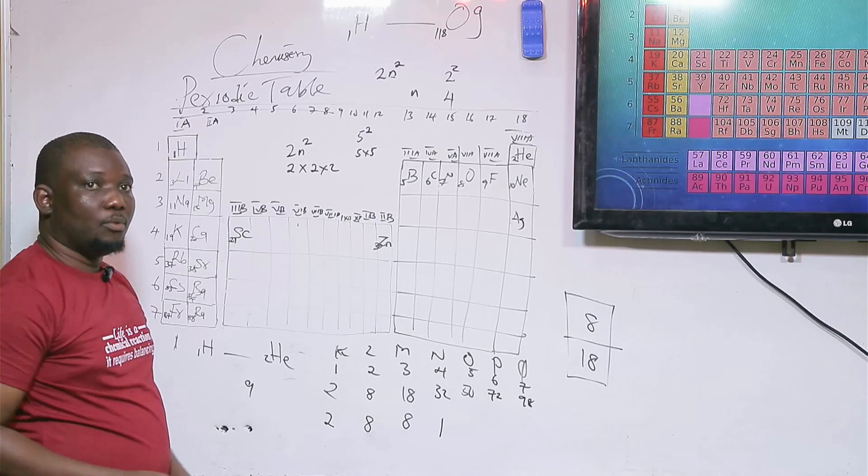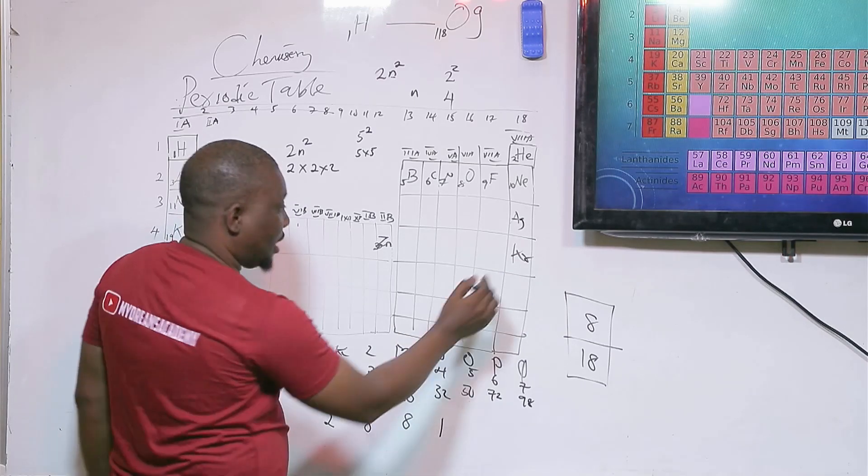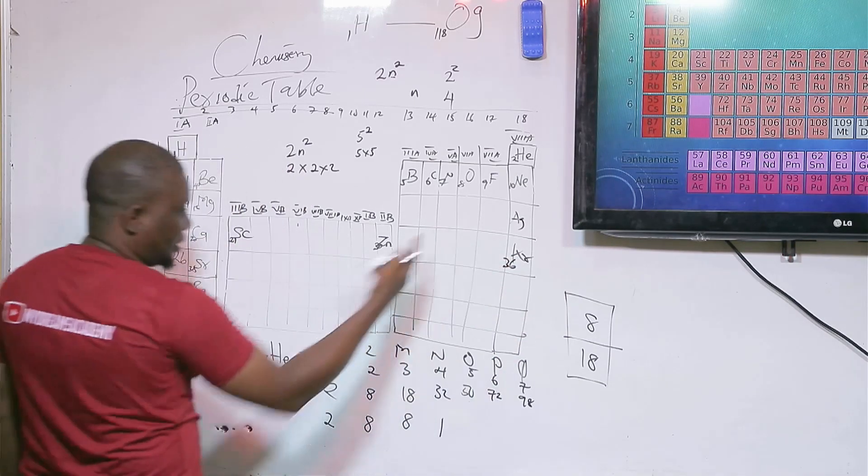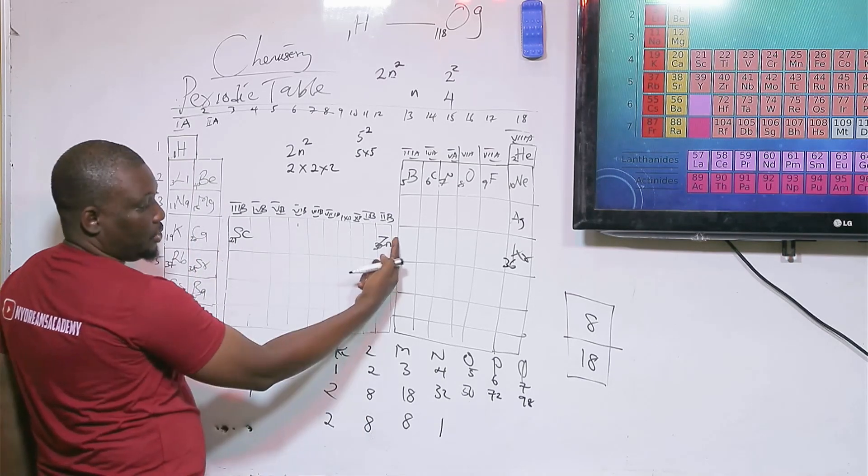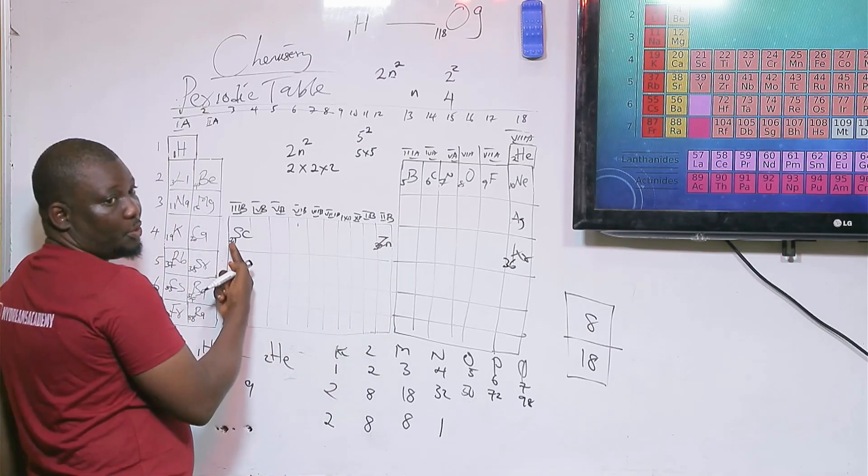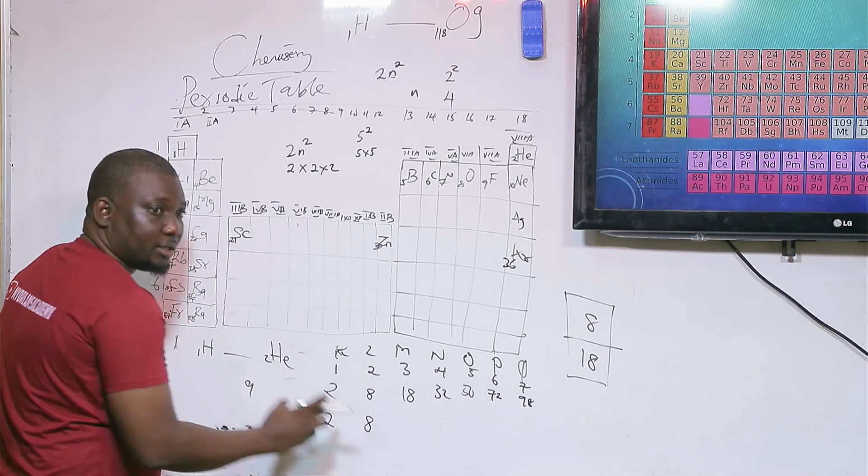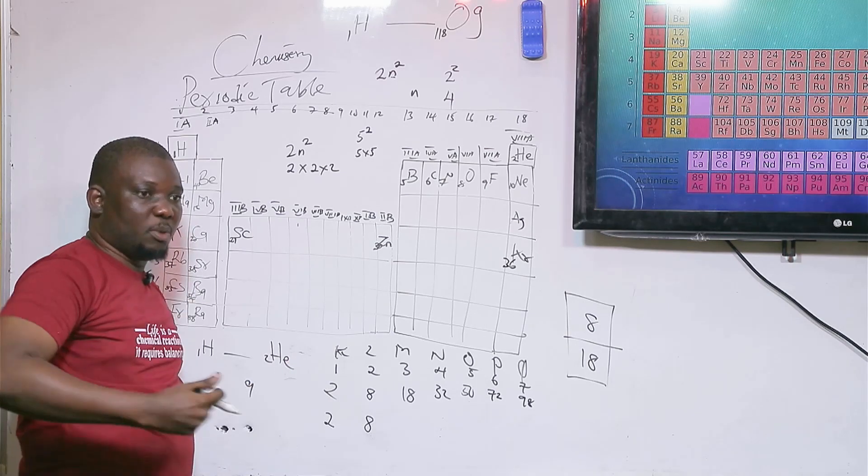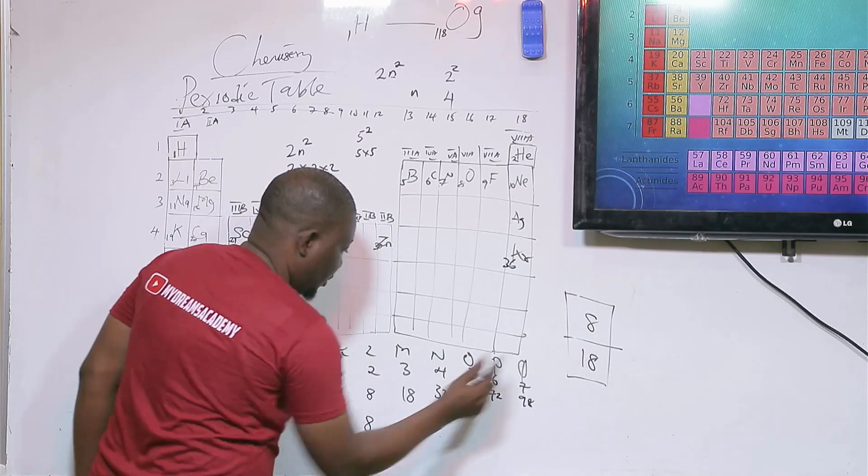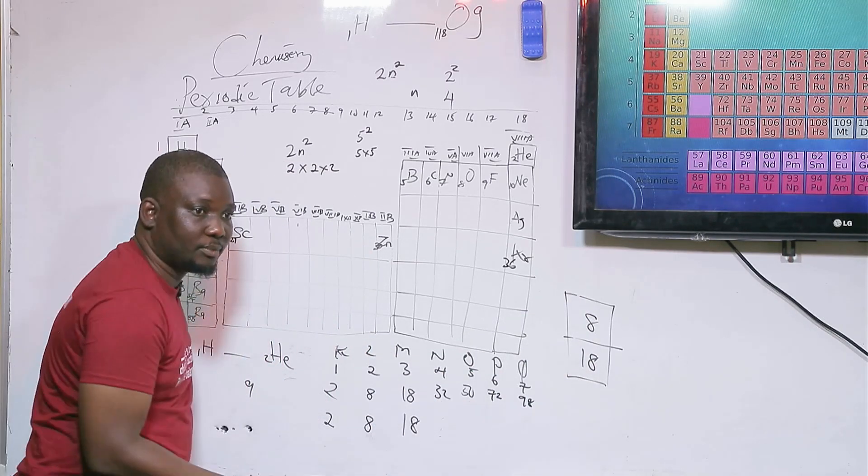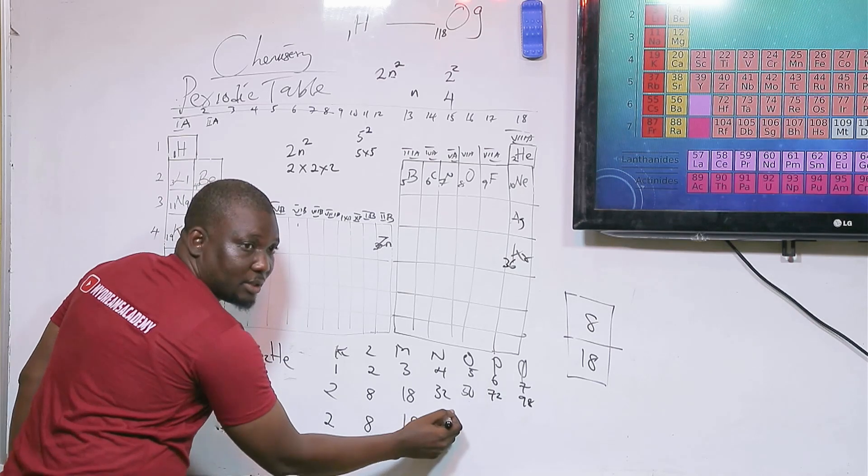Let's check krypton, which is 36. Here will be 2, here will be 8. What you do is minus 10 from the atomic number: 36 minus 10 is 26. Which octet level is 26 closer to, 8 or 18? So what goes is 18, remainder is 8. What enters is 8.